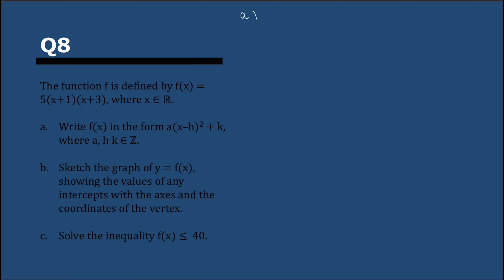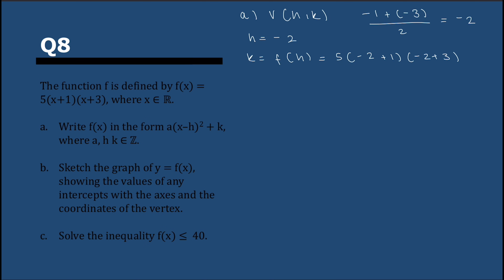We have a quadratic function and we have to put it in vertex form. The first step is finding the x-coordinate of the vertex. We know the two x-intercepts are −1 and −3, and the vertex is always in the middle, so h = −2. To find k, we substitute −2 into the original function: 5(−2 + 1)(−2 + 3) = −5. So k = −5, and f(x) = 5(x + 2)² − 5, where a = 5.